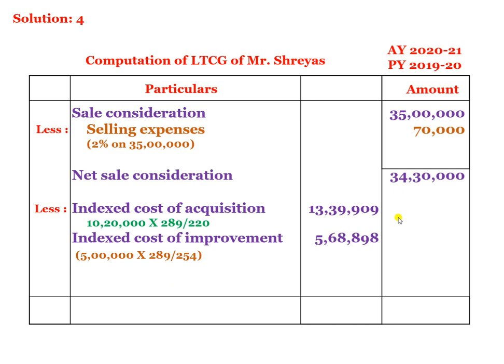Less: indexed cost of improvement. The improvement is the first floor construction done in 2015-16, and the amount spent is rupees 5 lakhs. Indexed cost of improvement = 5 lakhs into 289 divided by the cost inflation index for the year of improvement 2015-16, which gives us 5,68,898.